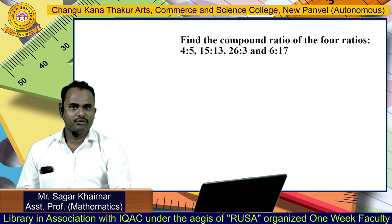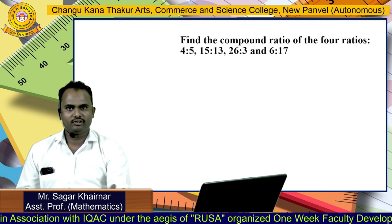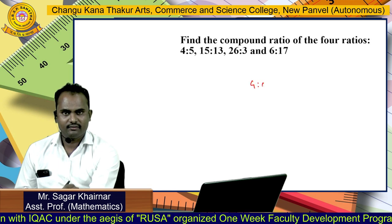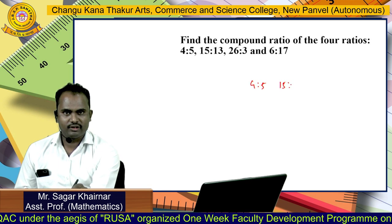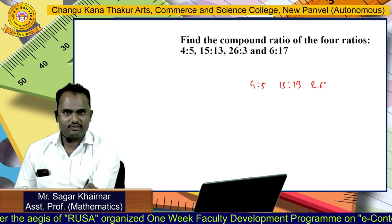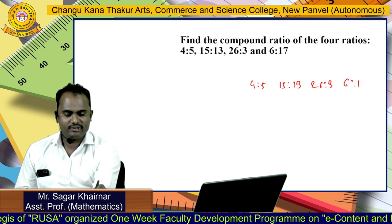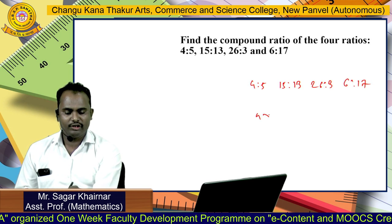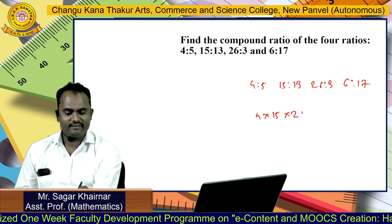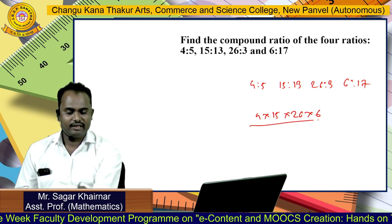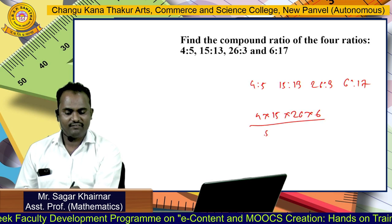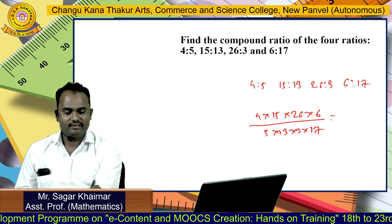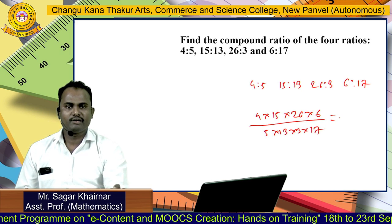Find the compound ratio of the 4 ratios: 4 as to 5, 15 as to 13, 26 as to 3, and 6 as to 7. The answer is simply multiply: 4 into 15 into 26 into 6 divided by 5 into 13 into 3 into 7. This will be the compound ratio.